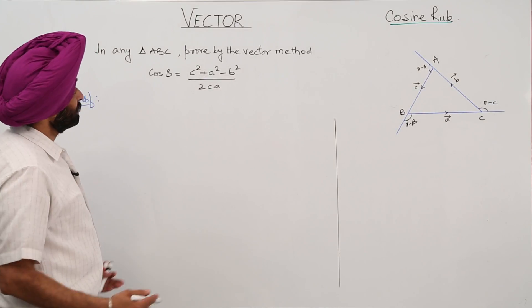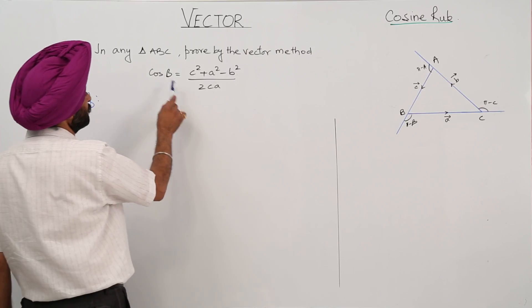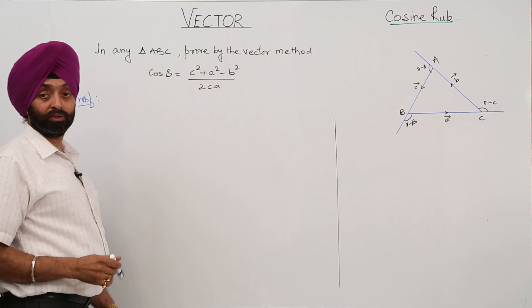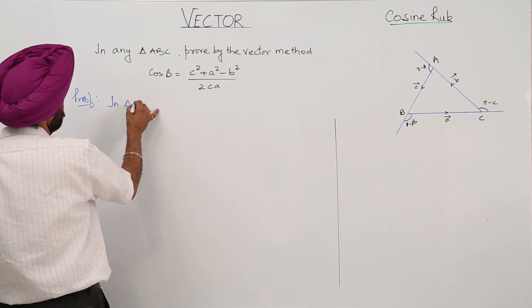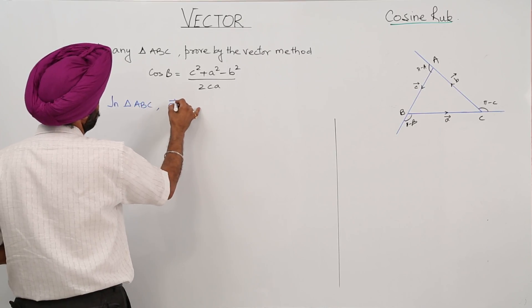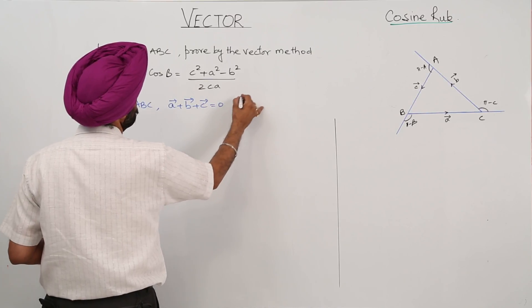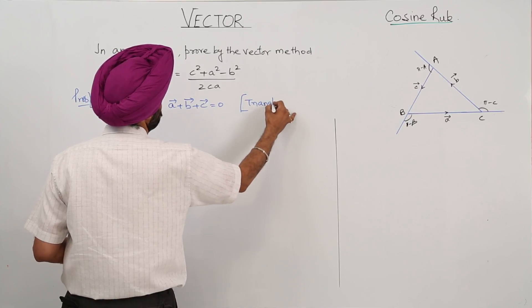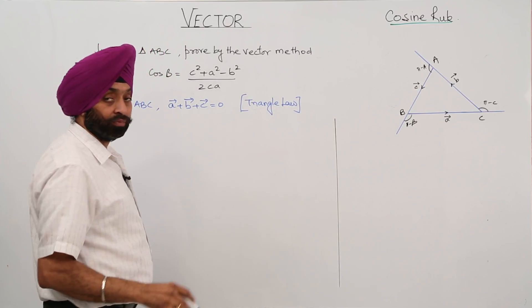Now, the cosine rule. The second step is to show that cos B equals c squared plus a squared minus b squared upon twice of ca. In triangle ABC, vector a plus vector b plus vector c equals zero, by the triangle law. Directions are given in the figure.